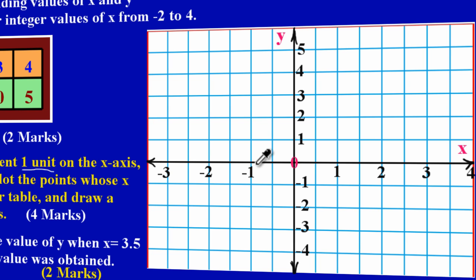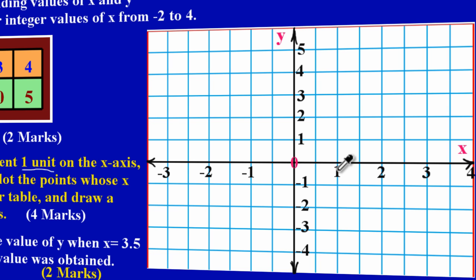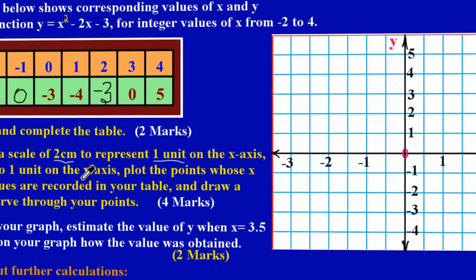Moving in a negative direction means going down. From here I move another two centimeters — that's one, two — and I have a two there. Then another two centimeters gives me a three. So for every two centimeters, you're increasing by one — that's what two centimeters to one unit means. On the right side of zero on the x-axis, it's the same: one, two gets me to one; another two gets me to two, and so on.